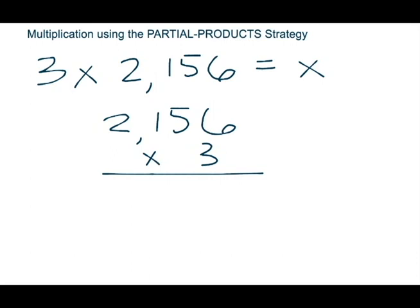But if you listen to and watch what we're doing, it truly makes a lot of sense and really gets students understanding the math behind solving these types of problems. Our top number is 2,156. There are four digits within that number and we are going to find all four of the products of each of the values of those digits. I'm going to start with the largest digit, and that's the 2 because it's in the thousands place. So if you have 2 thousands, that's 2,000, and we're going to multiply that by the bottom factor, which is 3.